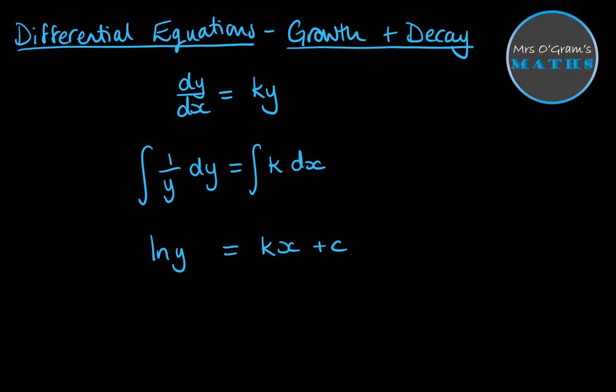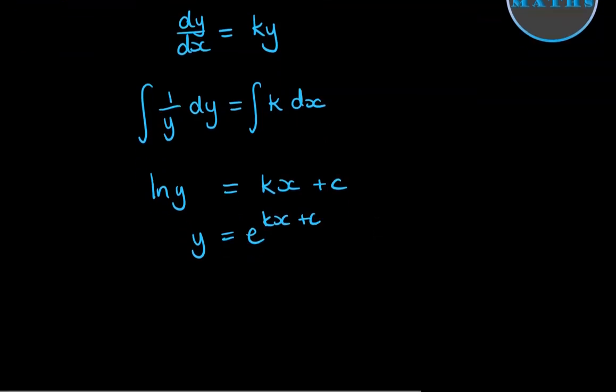Then we will frequently want this to have the equation in the form y equals something, so this would be y equals e to the kx plus c, which we saw in the previous video. We can sort that out to be a times e to the kx, because remember this is e to the kx times e to the c, which is just simply a constant.